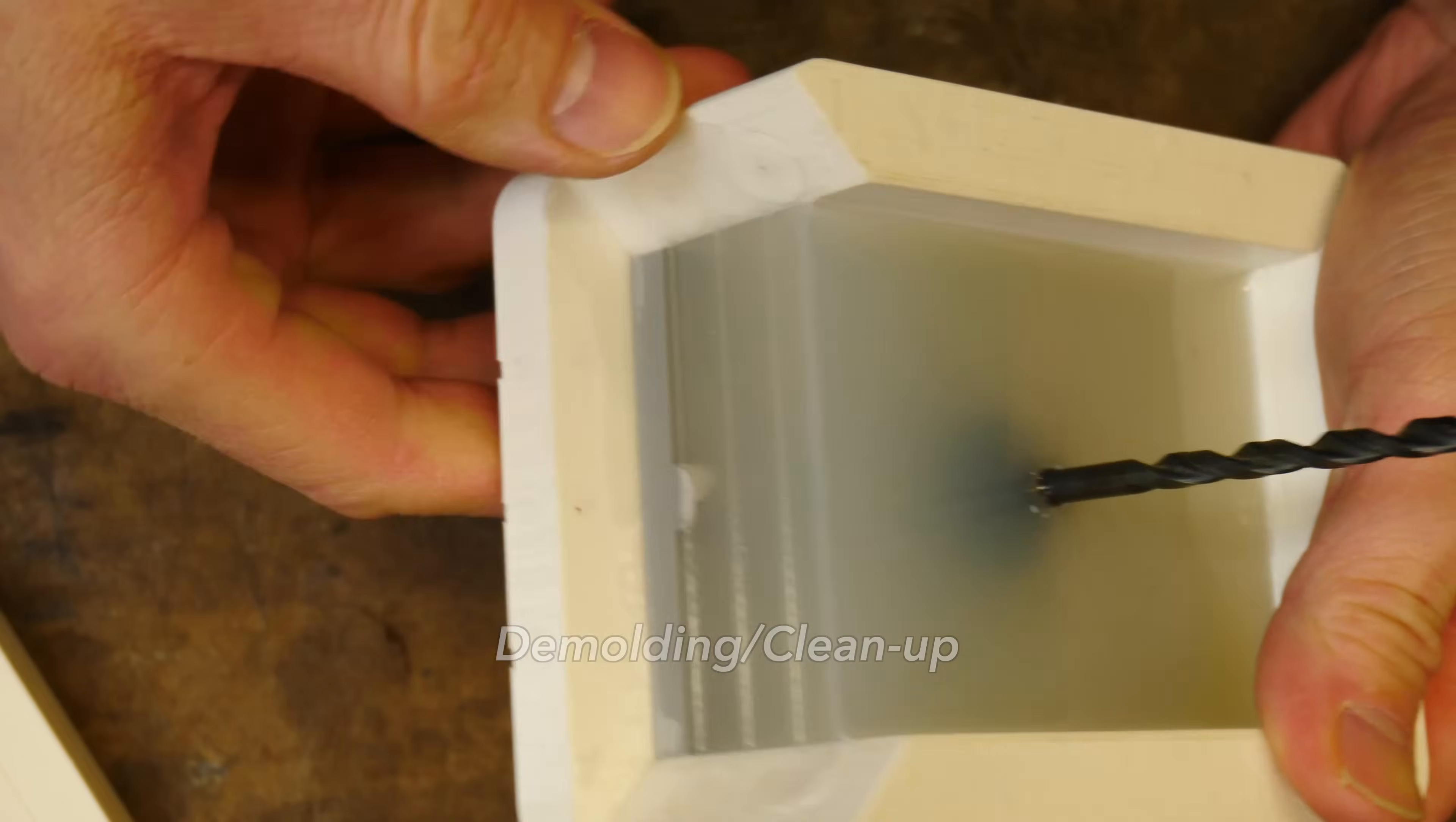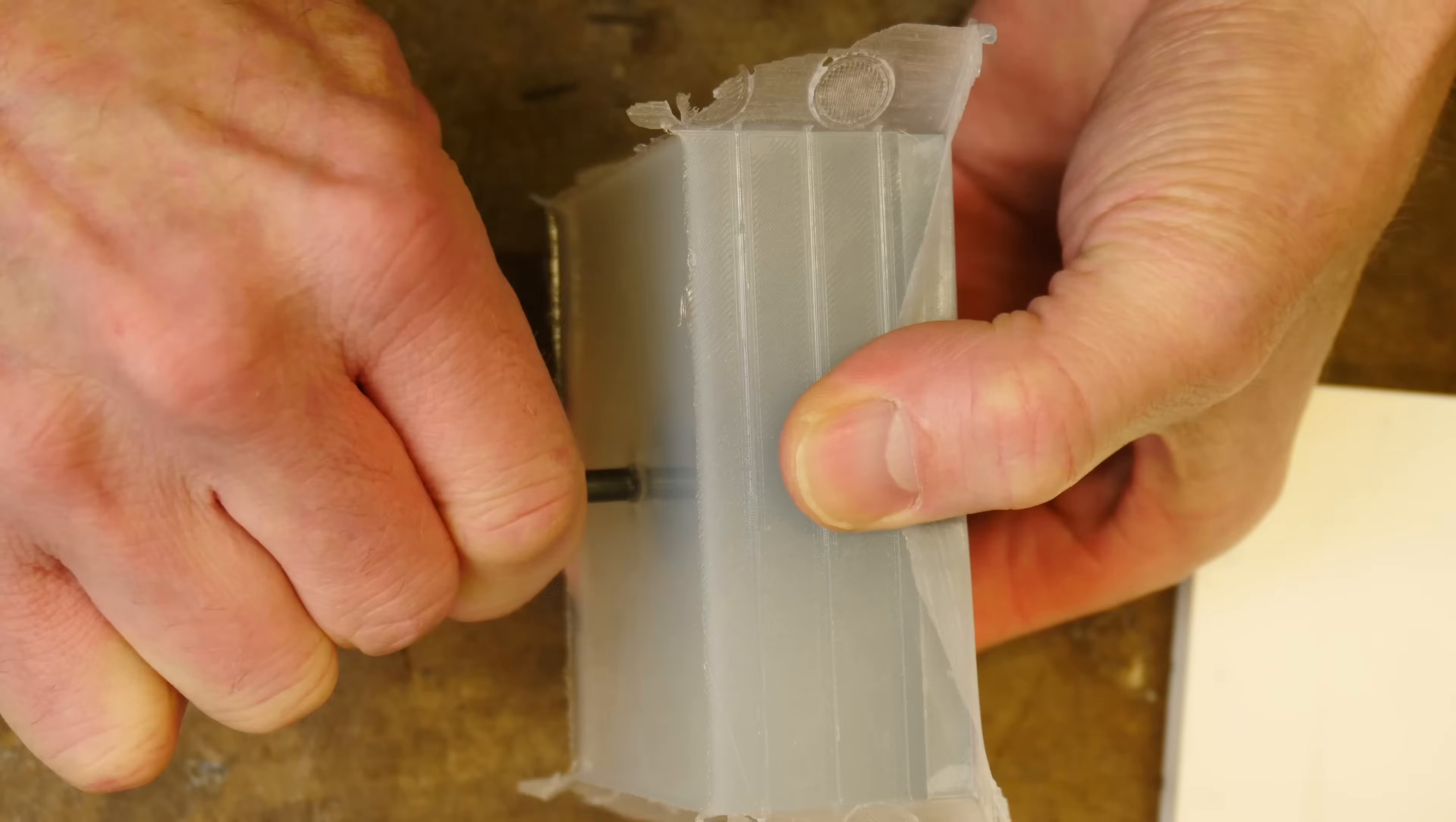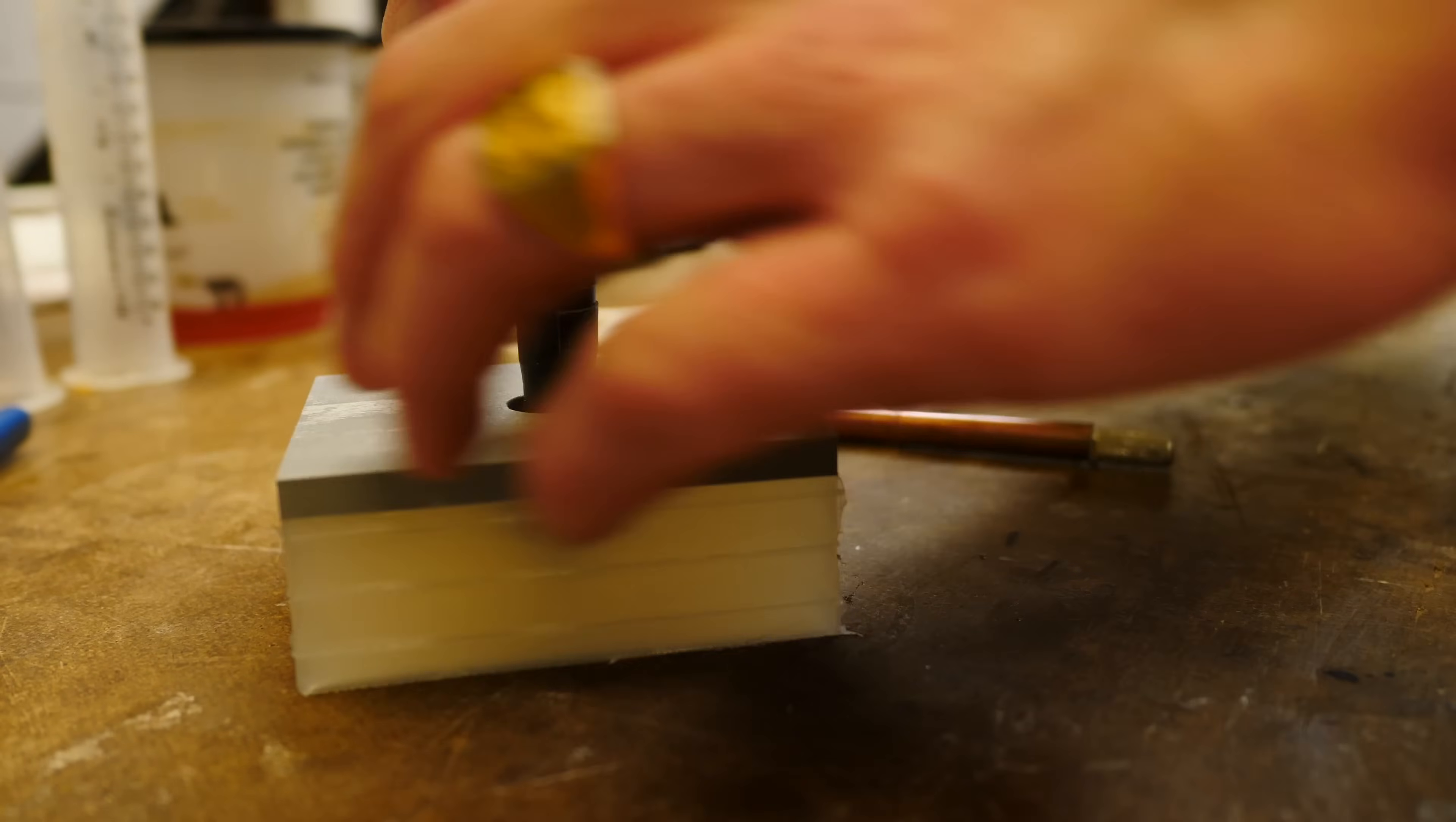That silicone has cured overnight. Let's demold that part. You can see I put a drill bit in the top. That is where the cord comes out of the vibration sensor, and this silicone just needs minimal cleanup from some of the flash from the molding process.